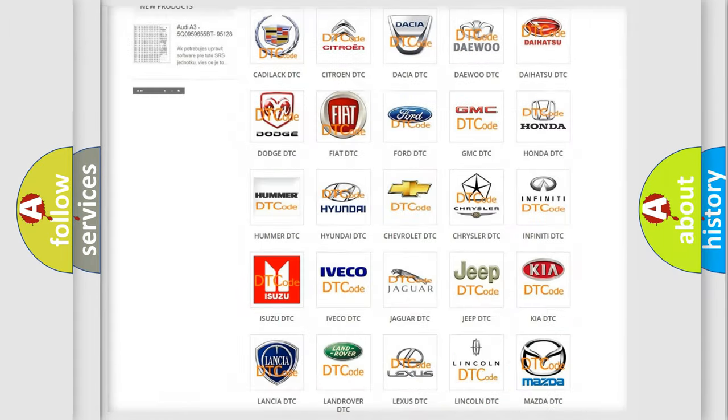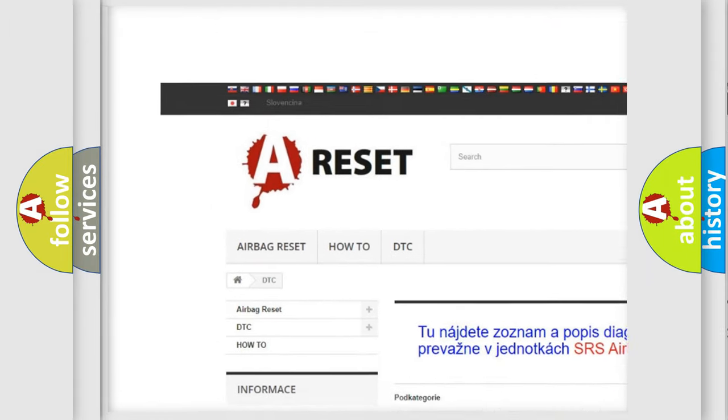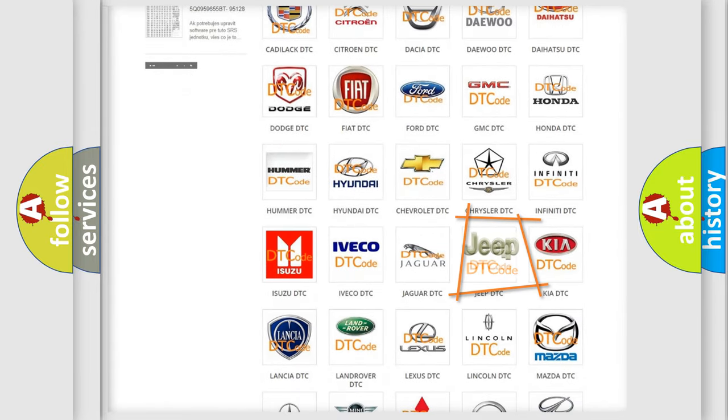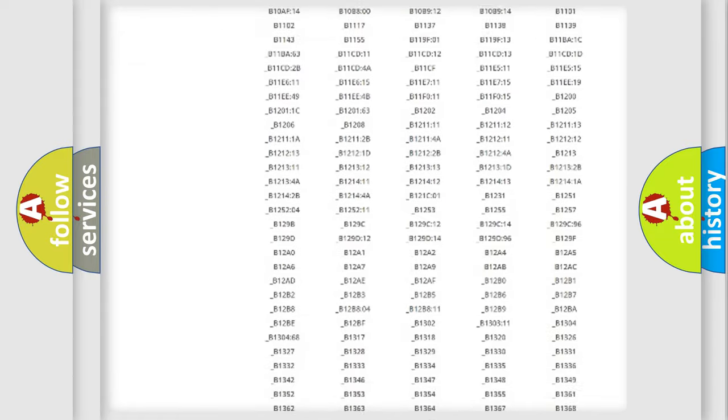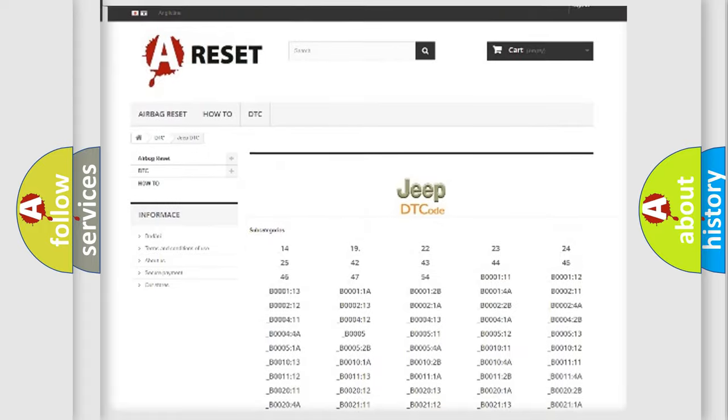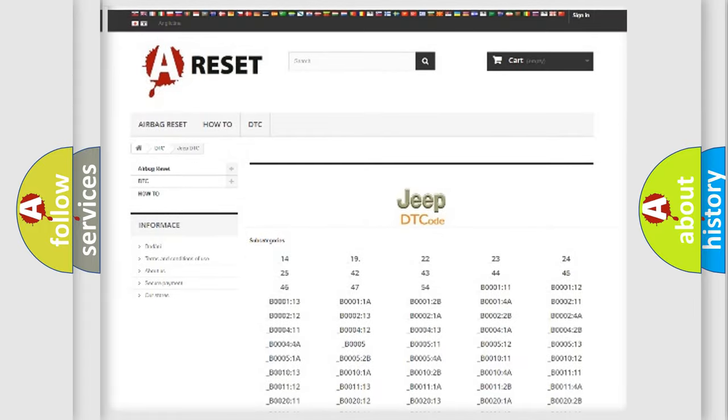Our website airbagreset.sk produces useful videos for you. You do not have to go through the OBD2 protocol anymore to know how to troubleshoot any car breakdown. You will find all the diagnostic codes that can be diagnosed in Jeep vehicles, and also many other useful things.